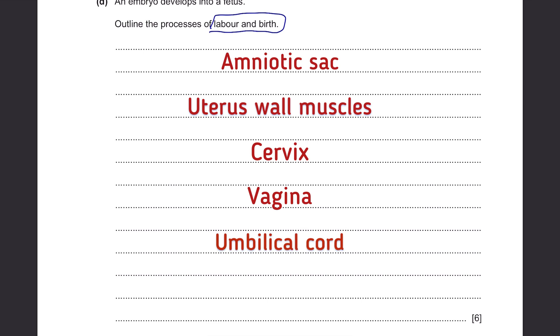Before delivery, you have to cut the umbilical cord to detach the baby from the mother's womb. After the baby is born, lastly, there will be delivery of the afterbirth — the placenta — which is where the baby stayed before being born, and that will be released outside as well.